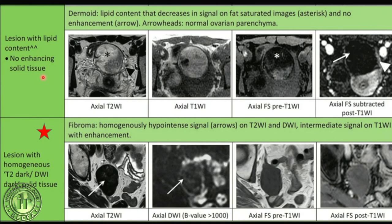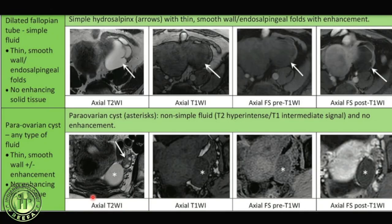Dermoids with lipid content and no enhancing solid tissue are ORADS 2 — this is critical. Since fat is bright on T1 even post-contrast, subtracted images must be taken whenever T1 hyperintensity is present pre-contrast, to confirm whether there is true enhancing solid tissue. If enhancing solid tissue is present, it upgrades the dermoid to ORADS 4. A completely solid lesion that is homogeneously T2 dark is ORADS 2 — representing fibroma or thecoma — rather than ORADS 5.